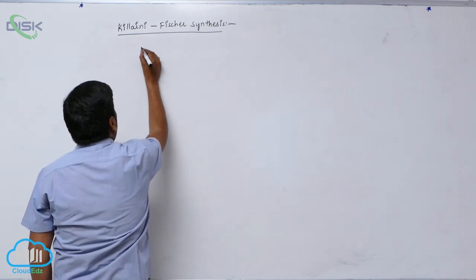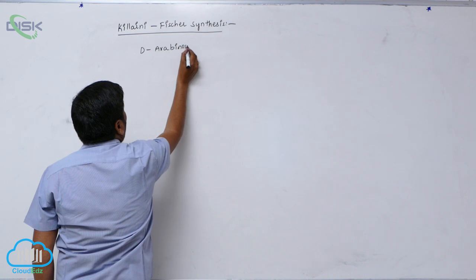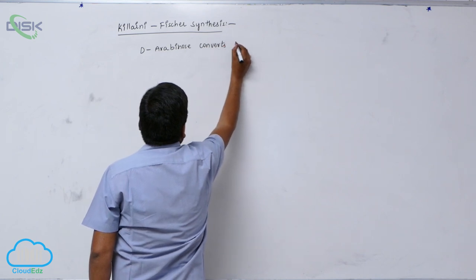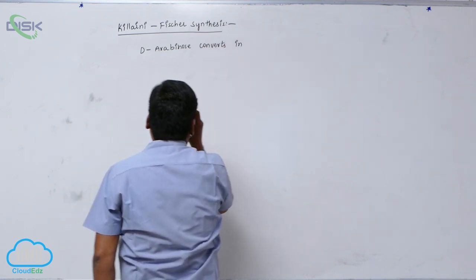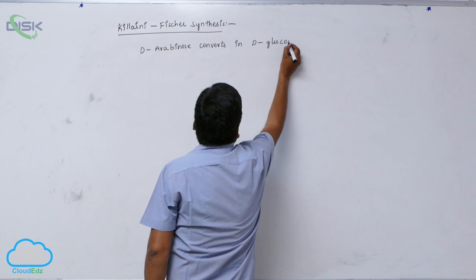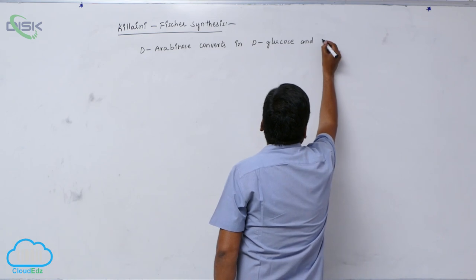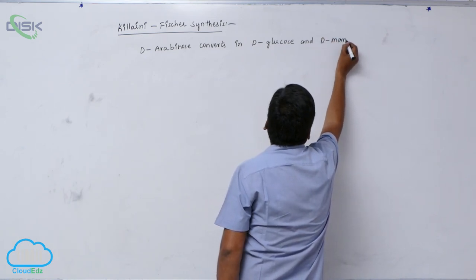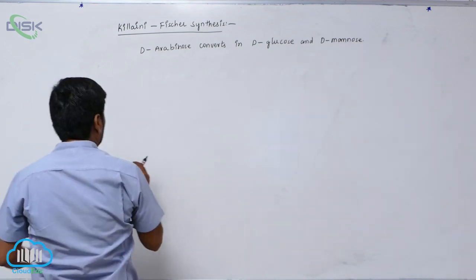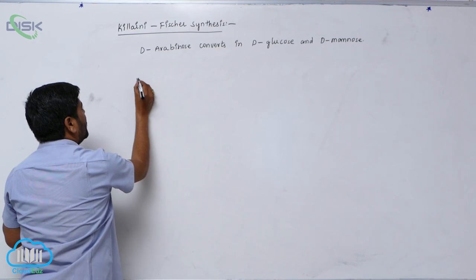In this method, D-Arabinose converts into D-Glucose and D-Mannose.